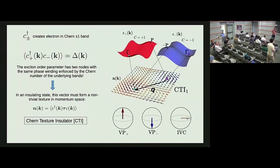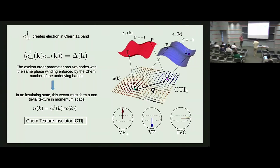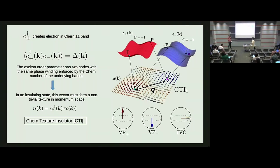Q: Have you checked twisted MoTe2? It has two Chern bands—it seems exactly this model. A: Yes, I think we did look at it, and I believe we found no CTI there—either because of band mixing or because it wants to polarize. The conclusion for MoTe2 was that there is no CTI, I think.